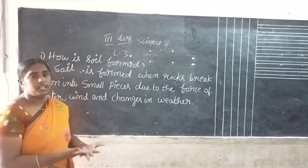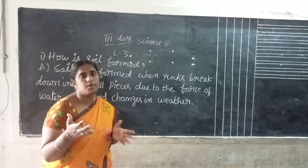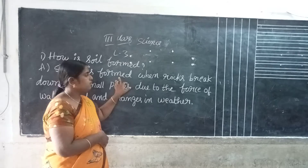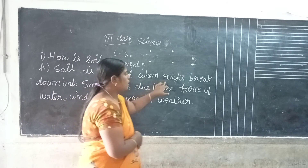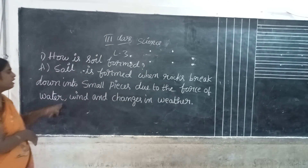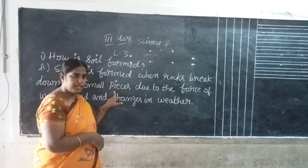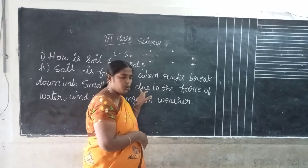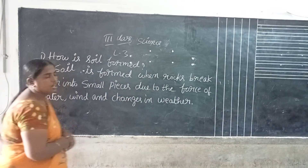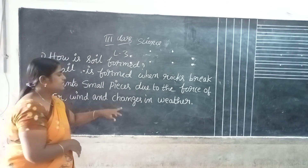So, what do we have to do? By the force of water and changes in weather, the rocks may break away into small small pieces. Soil is formed when rocks — R-O-C-K-S — break down — B-R-E-A-K — into small pieces — S-M-A-L-L — due to the force — F-O-R-C-E — of water and changes in weather.